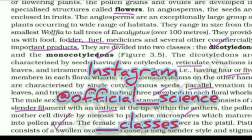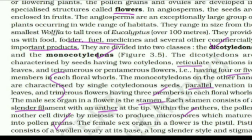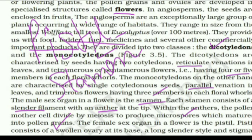The female sex organ in the flower is the pistil. The pistil consists of a swollen ovary at its base, a long slender style, and a stigma at the top.